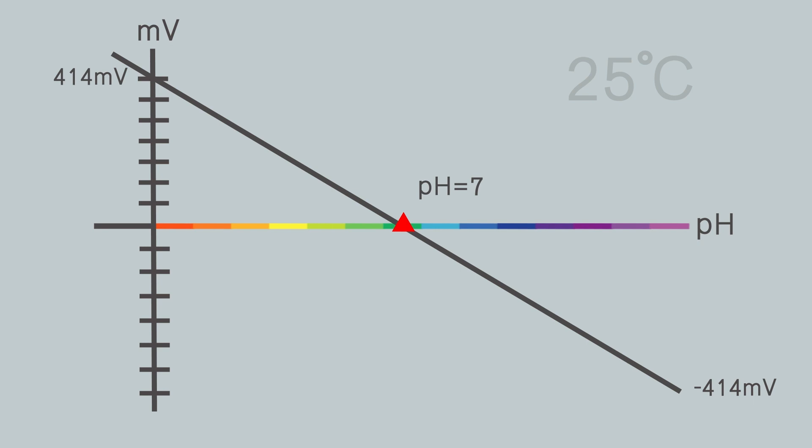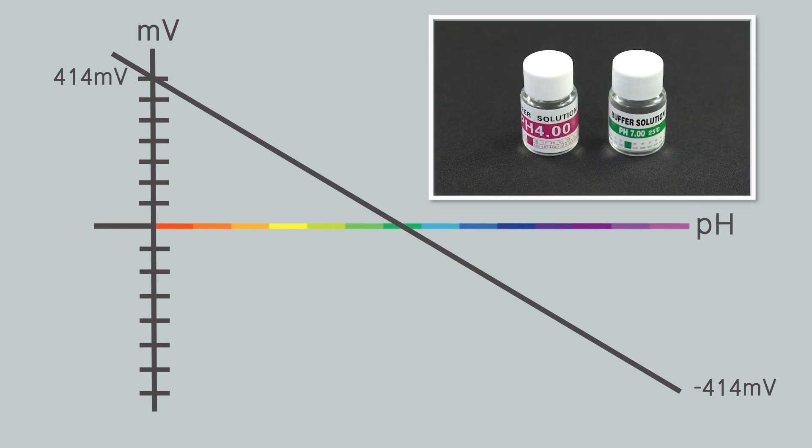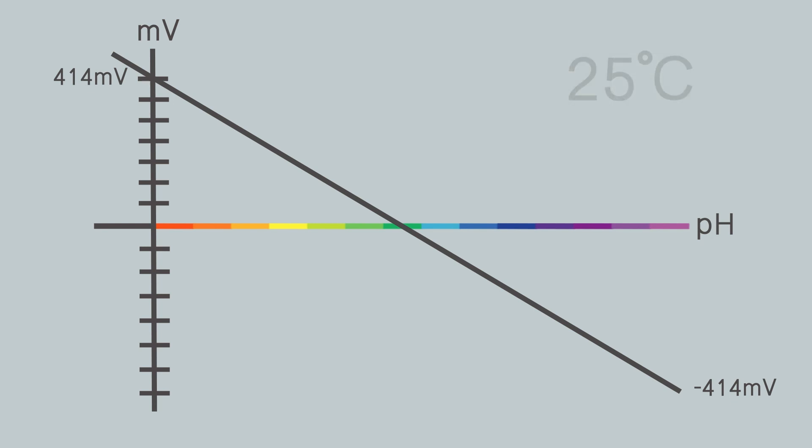In reality, no pH sensor can reach the theoretical voltages. So we need to use the buffer solutions with known concentrations to calibrate it.